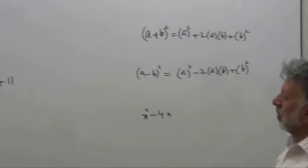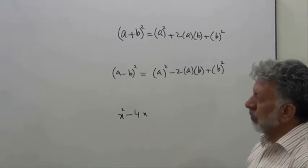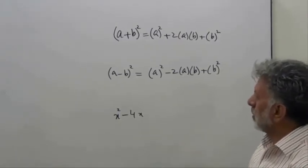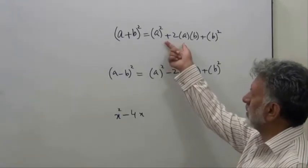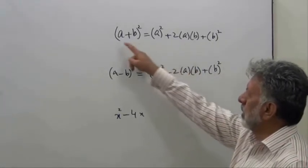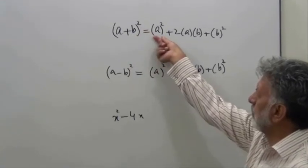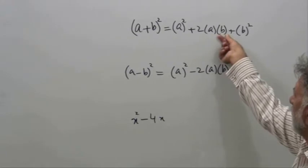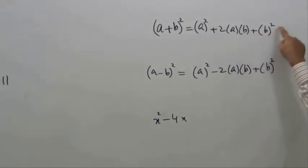Before we change the quadratic expression into a different form, let's review the basic quadratic formulas. (a + b) squared is the square of the first term plus 2 times first term times second term plus square of the second term.